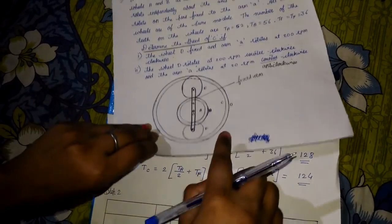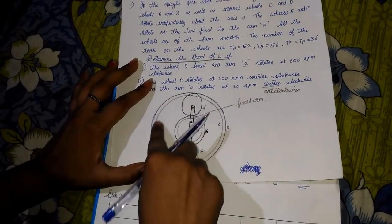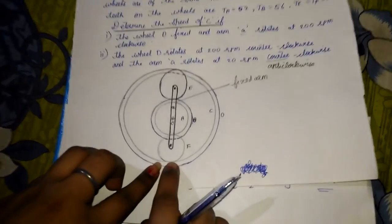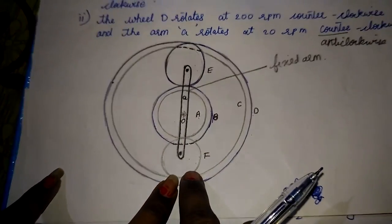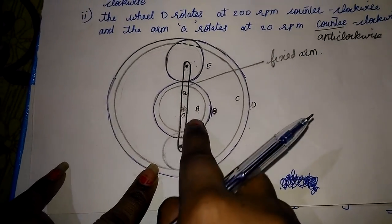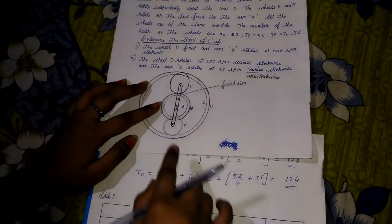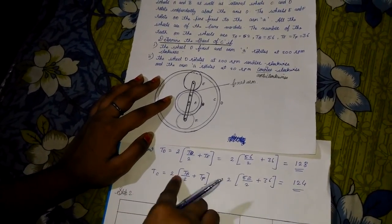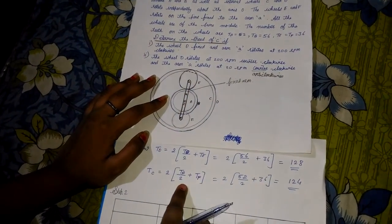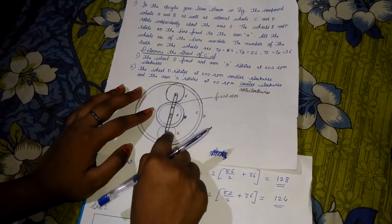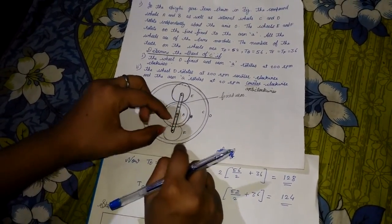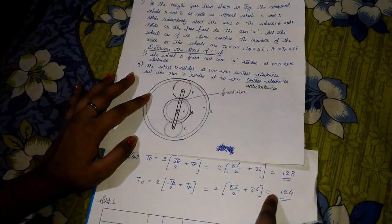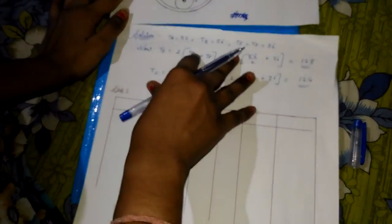Similarly, gear C is connected to gear F, and gear F is connected to gear A. Using the same approach: teeth of C equals 2 times (teeth of A divided by 2 plus teeth of F). Substituting: 2 times (52/2 + 36) gives teeth of C equal to 124. Step 1 is now complete.